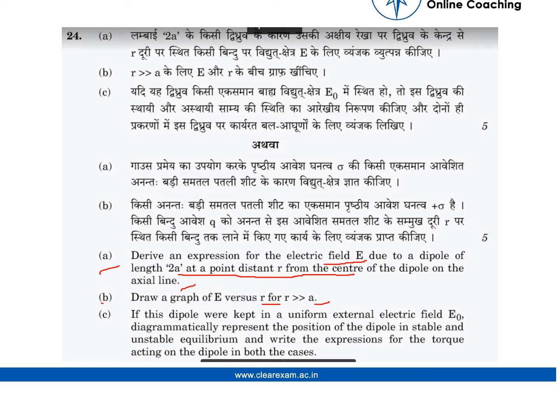For R greater than A, and part C: If this dipole were kept in a uniform external electric field E0, diagrammatically represent the position of the dipole in stable and unstable equilibrium and write the expressions for the torque acting on the dipole in both cases.